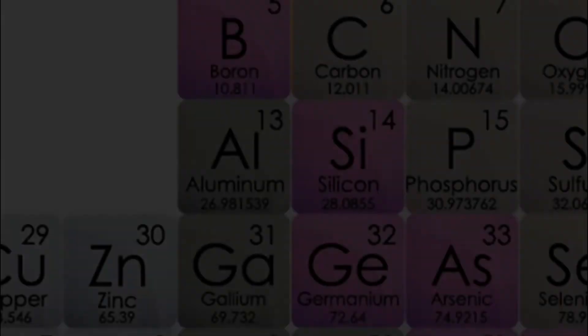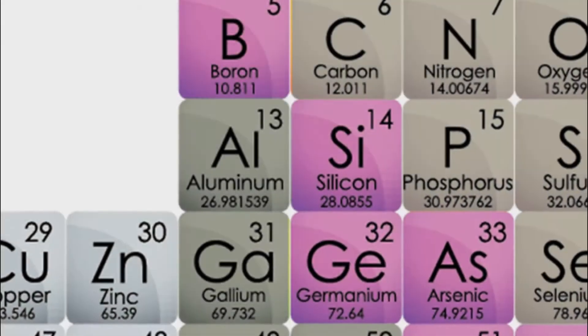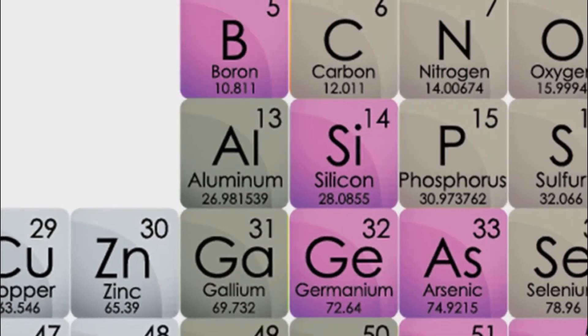Metalloids or semi-metals are a type of chemical elements that show an intermediate behavior between metals and non-metals in terms of ionization issues and bonding properties.